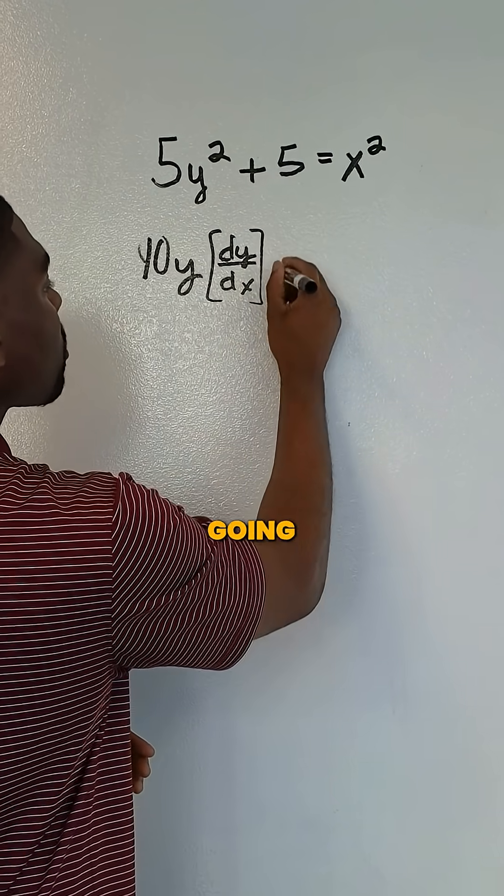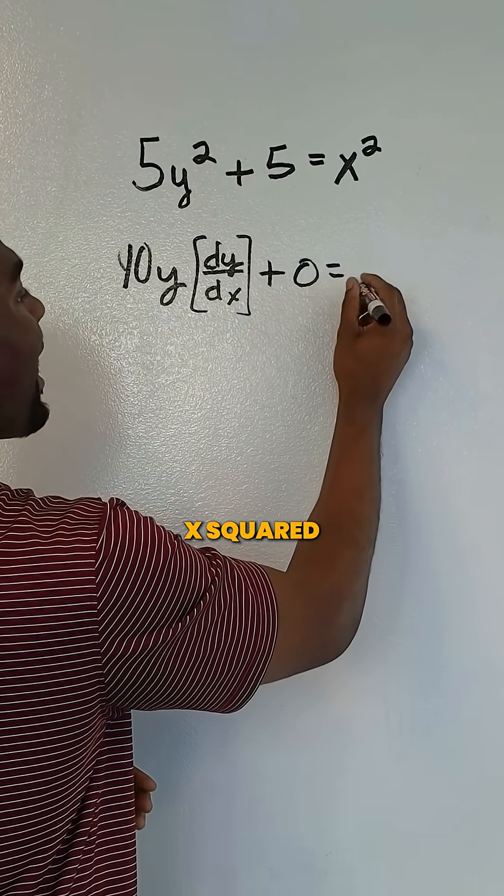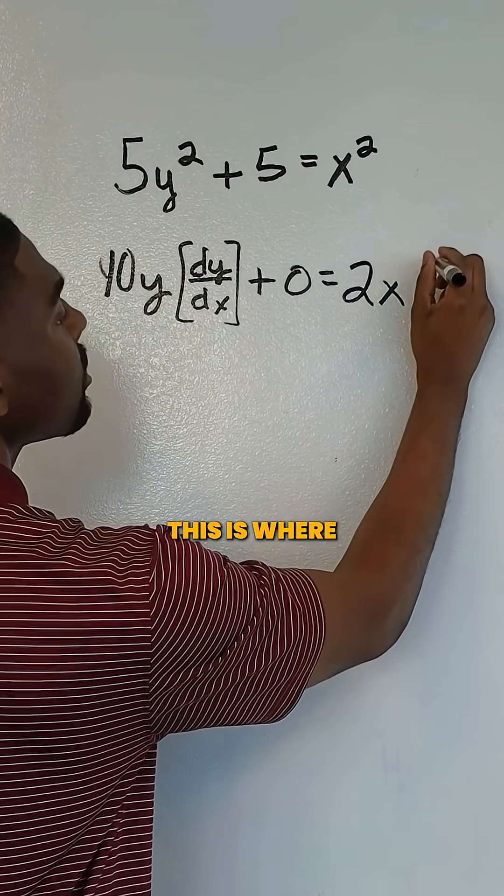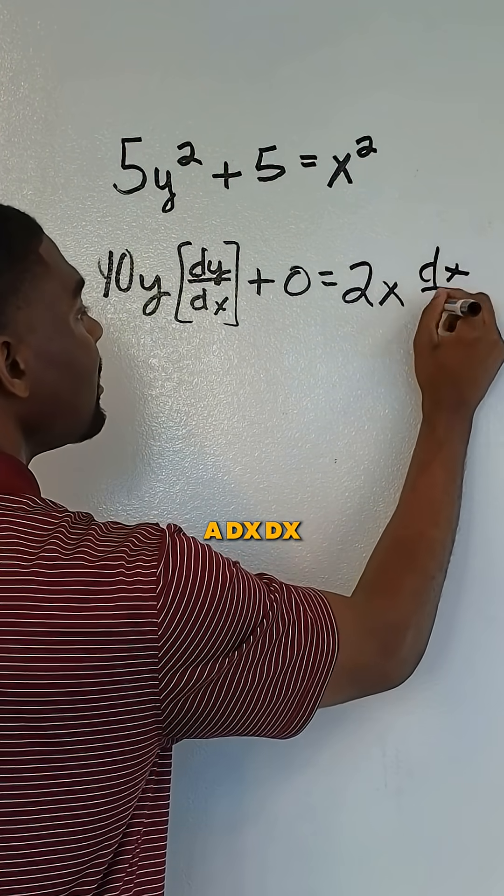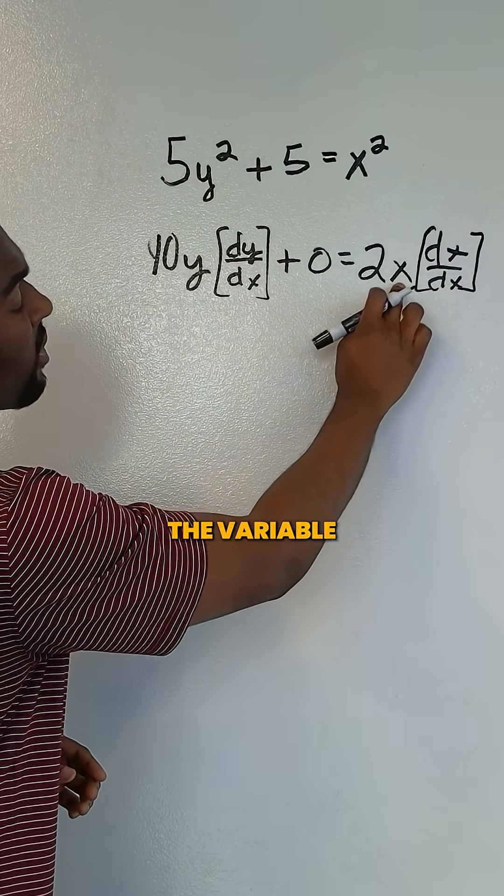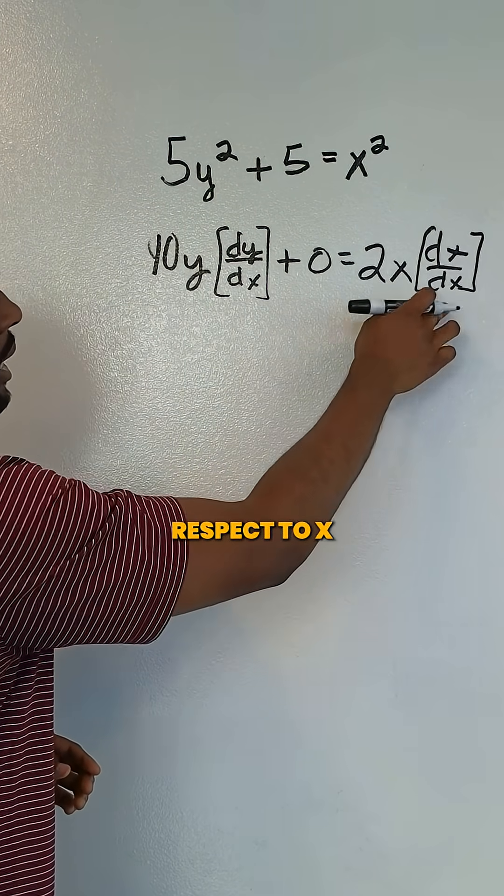Derivative of 5 is simply going to be 0, so we're going to put 0, and then the derivative of x² is going to be 2x, and then this is where we're going to put a dx/dx. Why are we writing dx/dx? Because we just took the derivative of the variable x with respect to x.